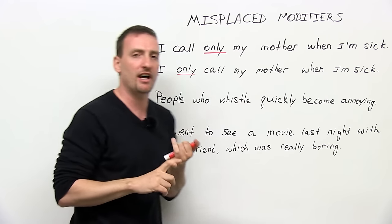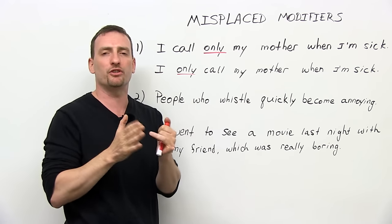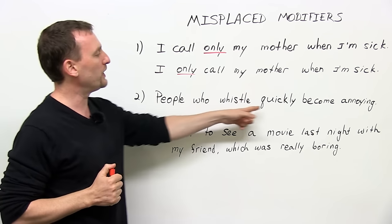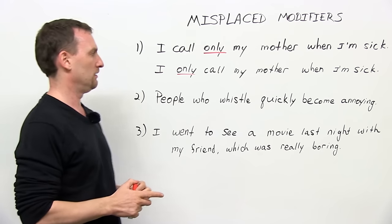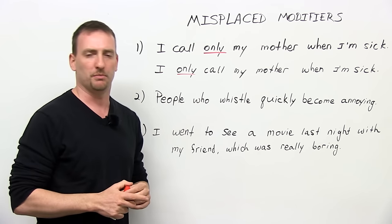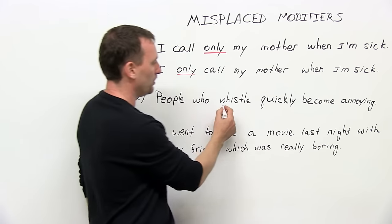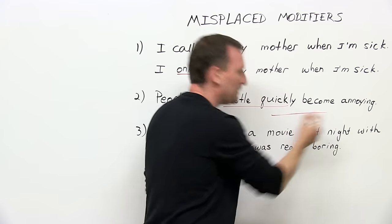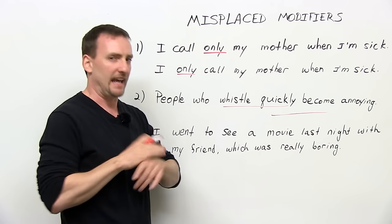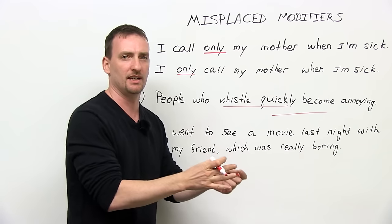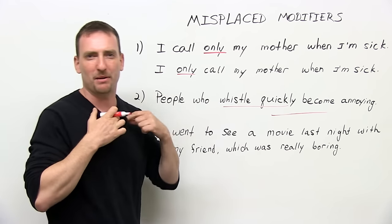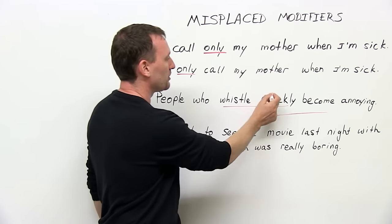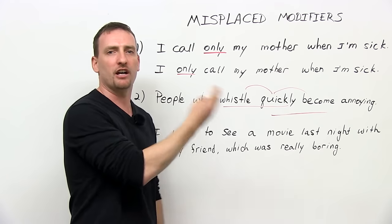The secret about modifiers: place them as close to the word you're trying to modify — but that also doesn't always work. 'People who whistle quickly become annoying.' You're thinking this sentence looks okay, but the problem is: what does it mean? Is it people who whistle quickly become annoying, or people who whistle quickly become annoying? All people who whistle, or just people who whistle quickly? This is called a squinting modifier — you're not sure which word the modifier is going with.